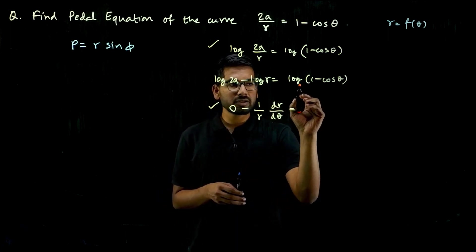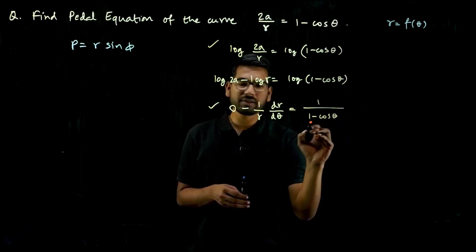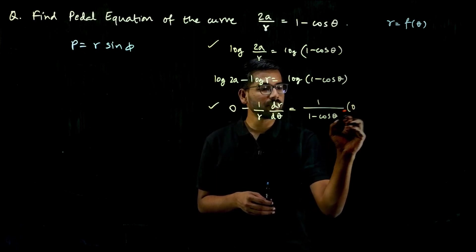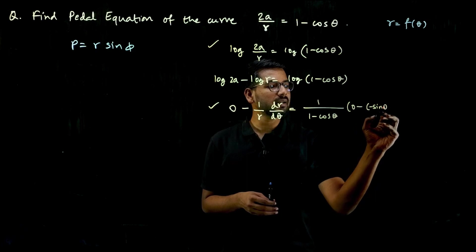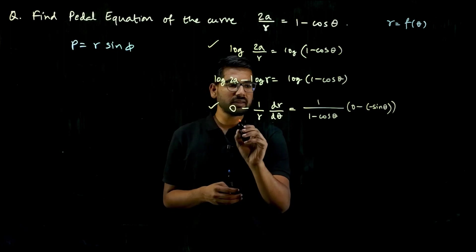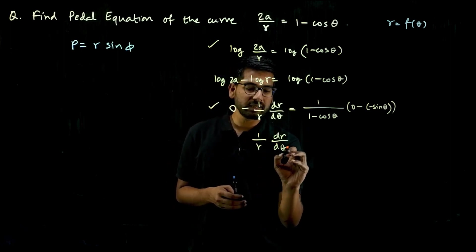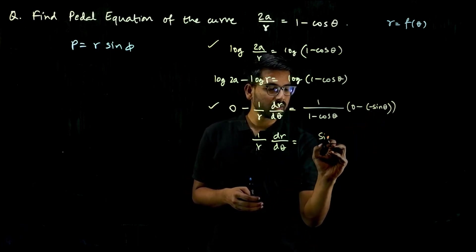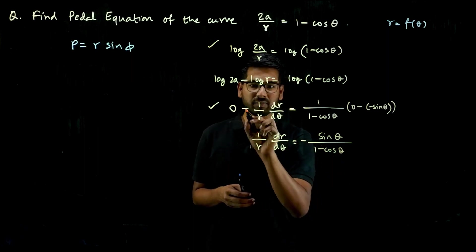The right-hand side: differentiation of log(1 - cos θ) is 1/(1 - cos θ) times the differentiation of (1 - cos θ). Differentiation of 1 is 0, minus differentiation of cos θ is minus sin θ. Moving the minus sign to the other side gives: (1/r)(dr/dθ) = sin θ / (1 - cos θ).